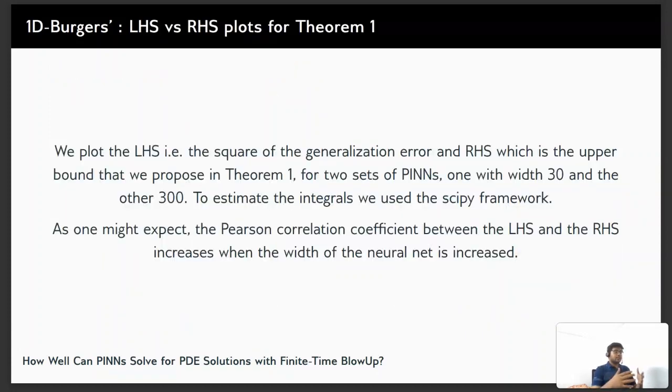Next we plot the LHS, that is the square of the generalization error, and the RHS which is the upper bound that we proposed in Theorem 1 previously for two sets of PINNs, one with width 30 and the other 300. To estimate the integrals we use the scipy framework. As one might expect, the Pearson correlation coefficient between the LHS and the RHS of that equation increases when the width of the neural network is increased.